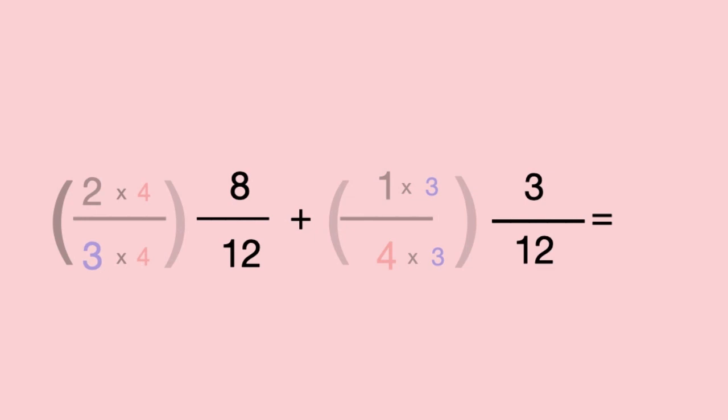This means 2 thirds will become 8 twelfths, and that 1 quarter will become 3 twelfths.